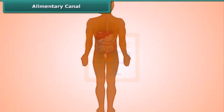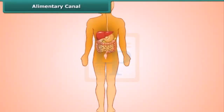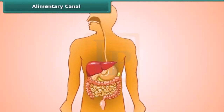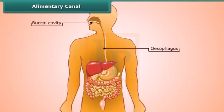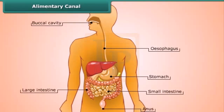You will be amazed to know that the food inside our body passes through an alimentary canal, or simply the digestive tract. Now let us know what happens to the food in the different parts of the digestive tract.